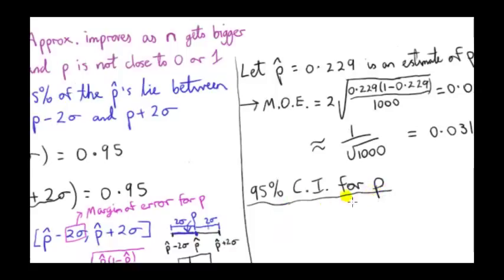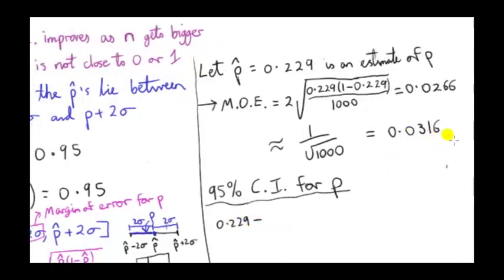Let's write down the 95% confidence interval for P. Here I have it. P hat is 0.229. So we subtract the margin of error, and we take our estimate P hat and add on this margin of error.